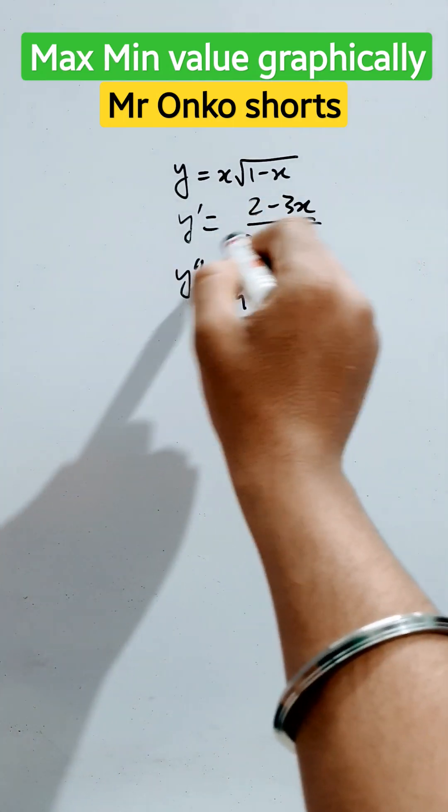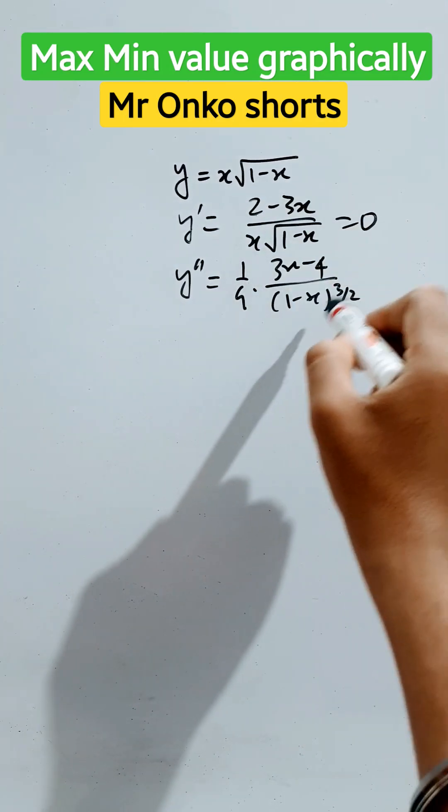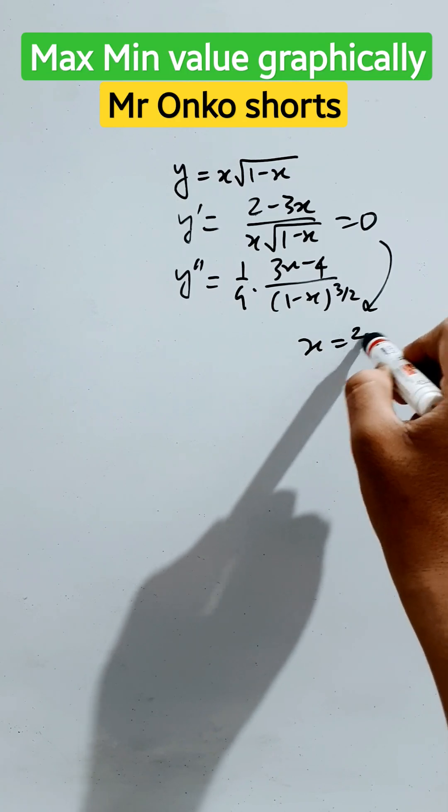So, we know that the first derivative must be equal to 0. So, you will get from here x equals to 2 by 3.